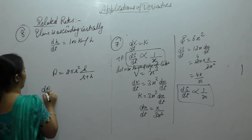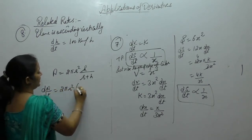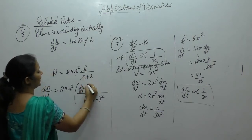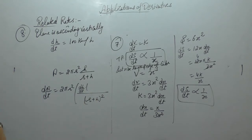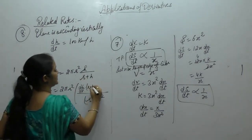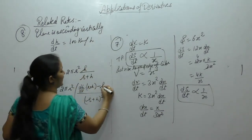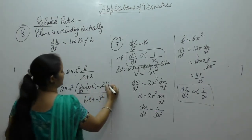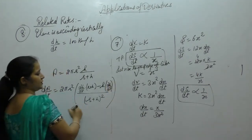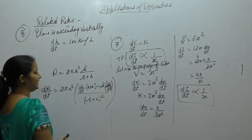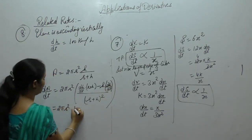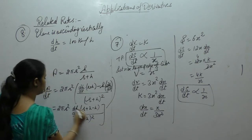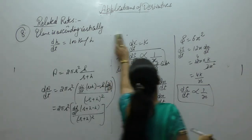Now differentiate it with respect to t using u upon v rule: 2 pi r square times v square u dash v. Derivative of r — r is constant here. This comes as it is minus h as it is, derivative of r plus h. Derivative of r is constant so 0 plus dh by dt.